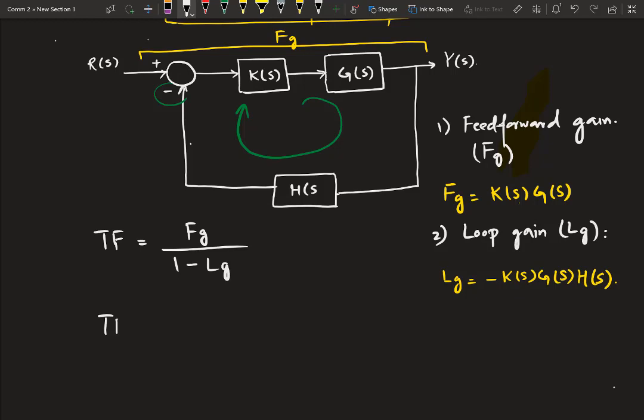So, if we put these values in this expression, we will get K of S into G of S divided by 1 and this minus and this minus, we will be having plus over here. So, it will be 1 plus K of S, G of S into H of S.